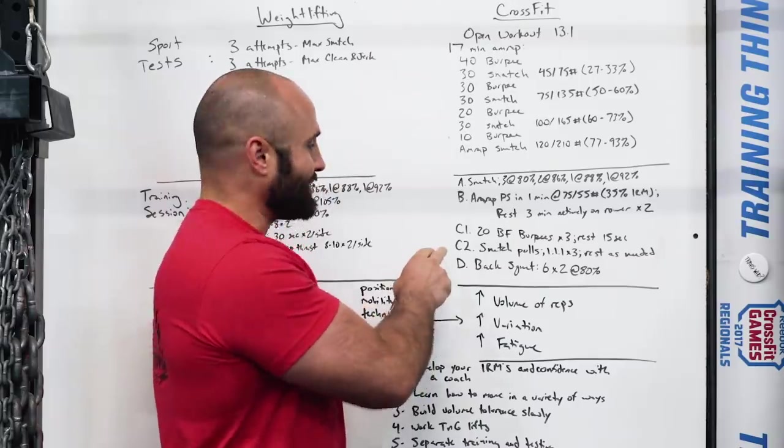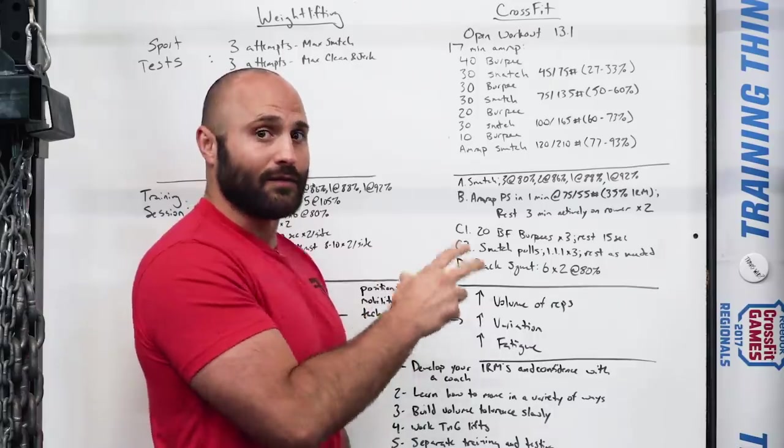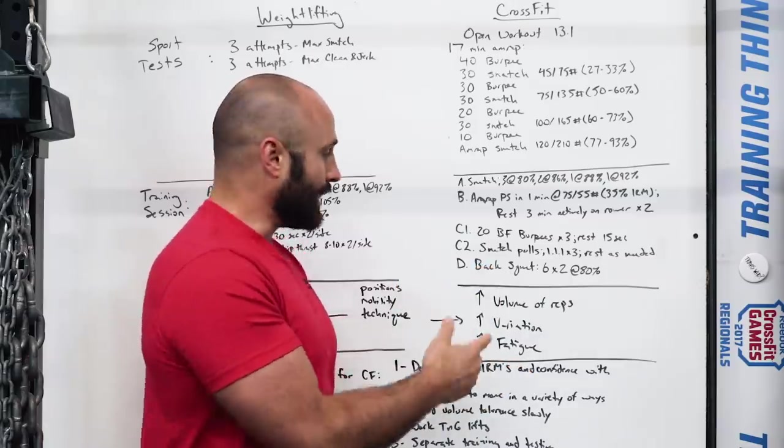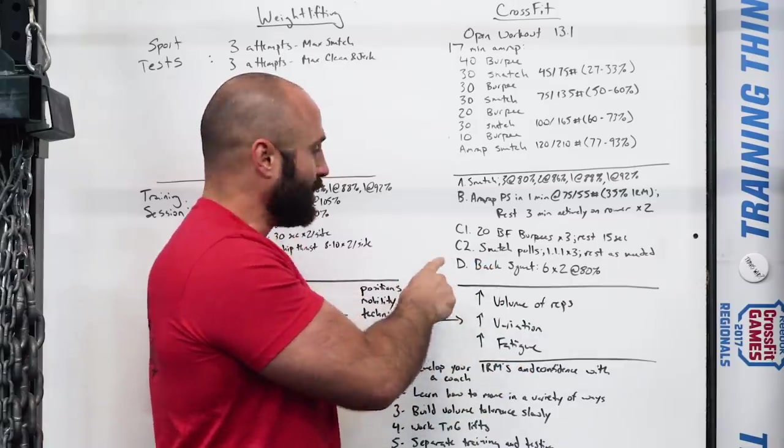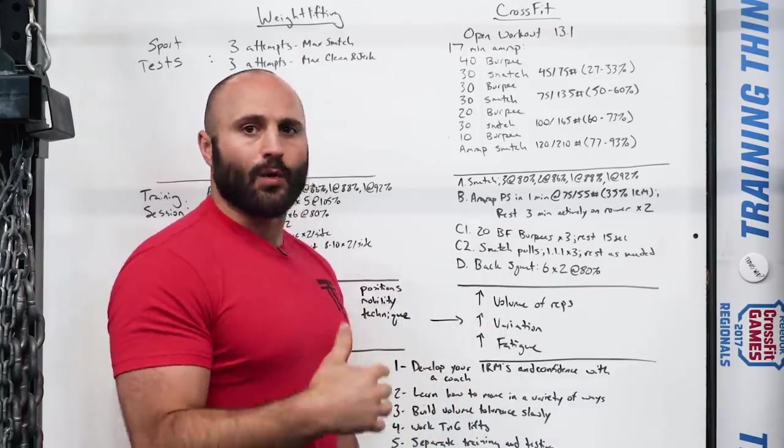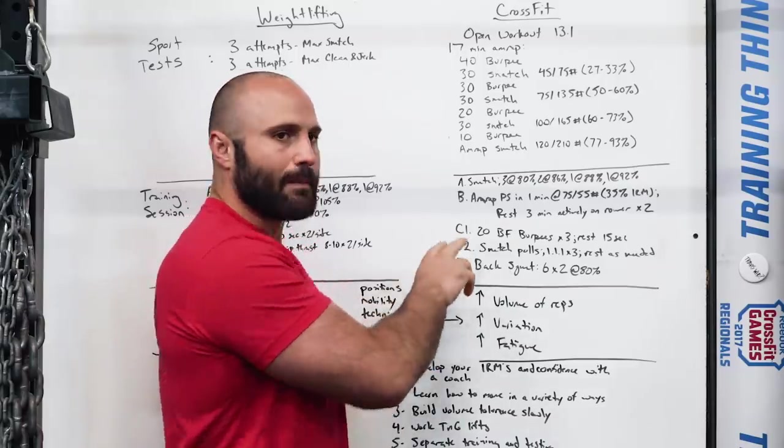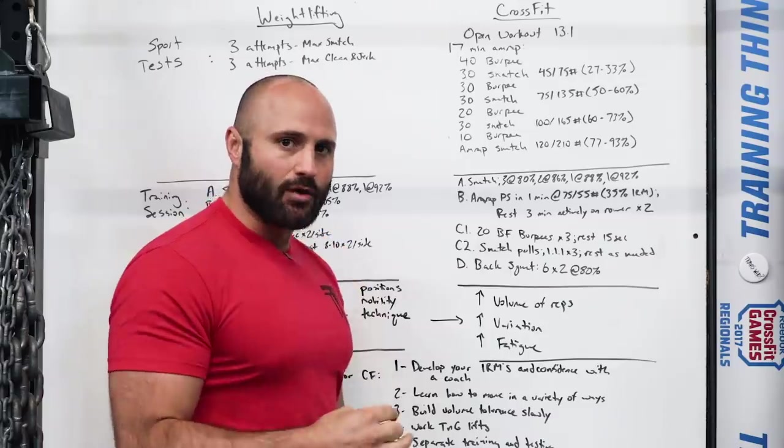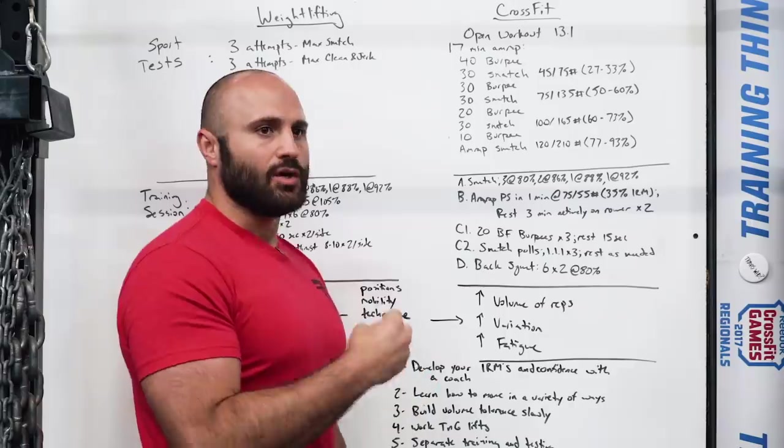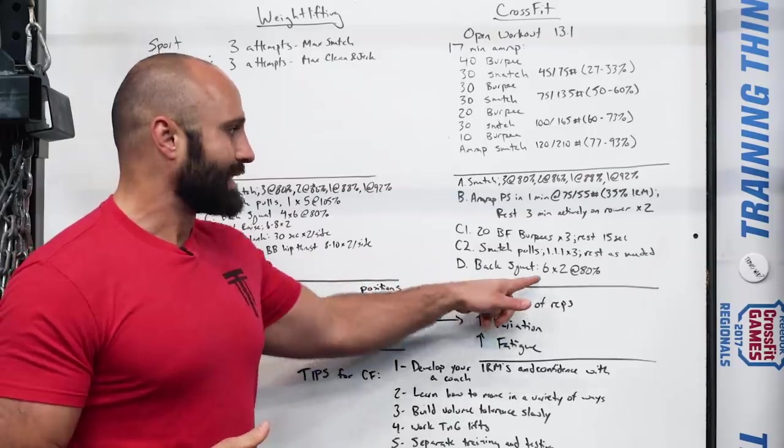Where A was training your one rep max precision, C1 and C2 is actually training sports specific strength endurance. If you want to be able to lift heavy under fatigue, you need to give your body some of the fatigue that you're going to experience in the test and then practice lifting. Snatch pulls here is a little bit safer and more effective because you can load this heavier without risking missing or being too tired in your catch position. This gives you an opportunity to be heavier in your loading and safer. If you do that over time, you'll be able to develop the strength that you need in a fatigue-based setting.